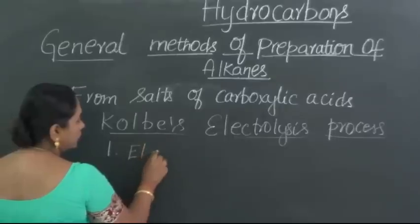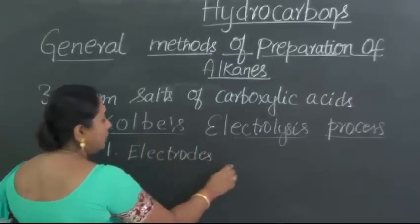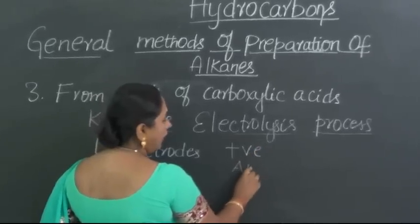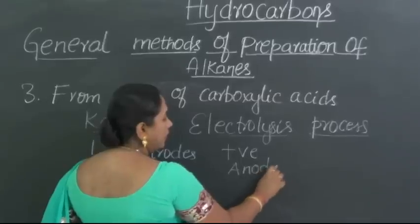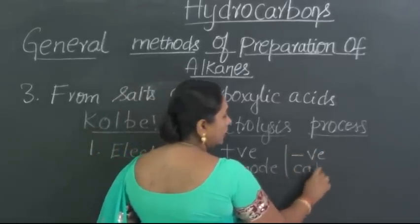First, the positively charged electrodes are called anode and the negatively charged electrodes are called cathode.